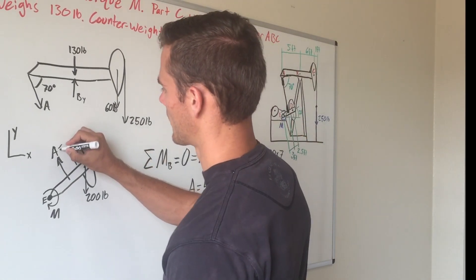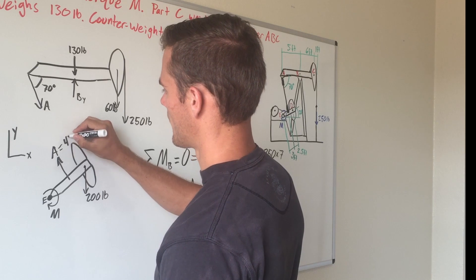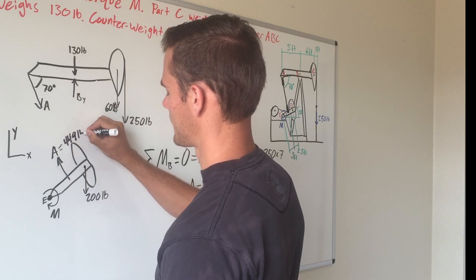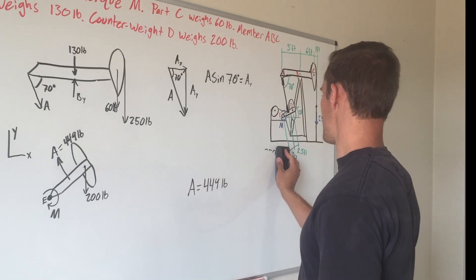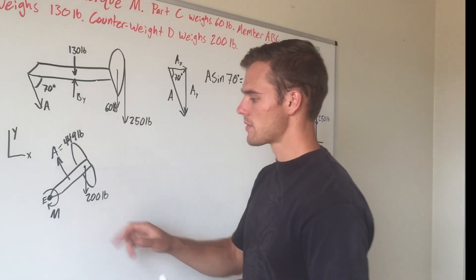We can label that here on our free body diagram: 449 pounds. Now that we've found that, we can move on to this free body diagram.